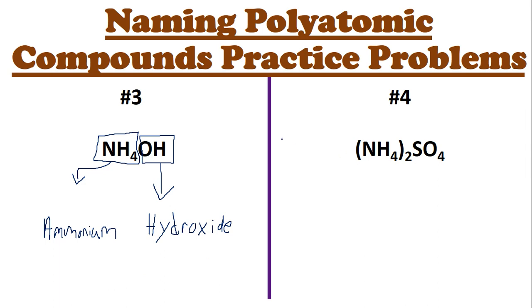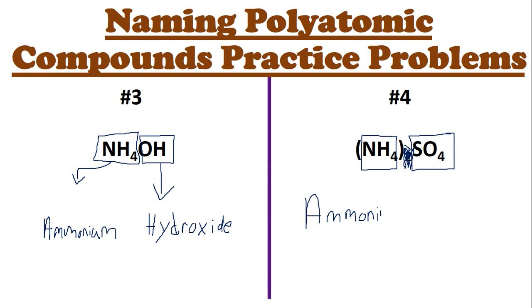Pause and try the fourth one — hint: there are two polyatomic ions. The first step is to box our polyatomic ions. NH4 is a polyatomic ion and SO4 is a polyatomic ion as well — we don't need to worry about the subscript 2. We name the first one, which we know from example three is ammonium. Then we name SO4, which is sulfate. The answer is ammonium sulfate.